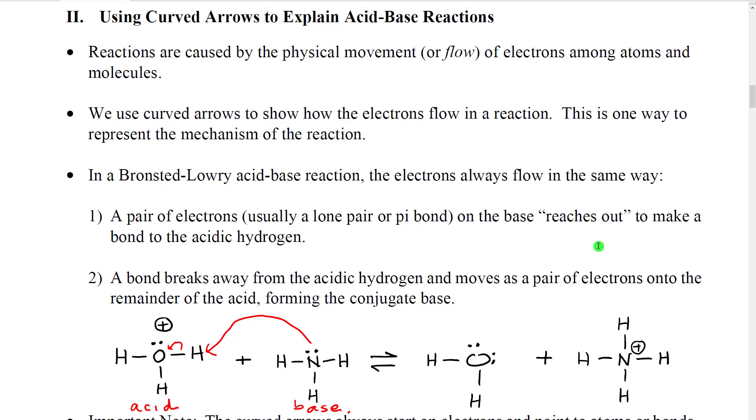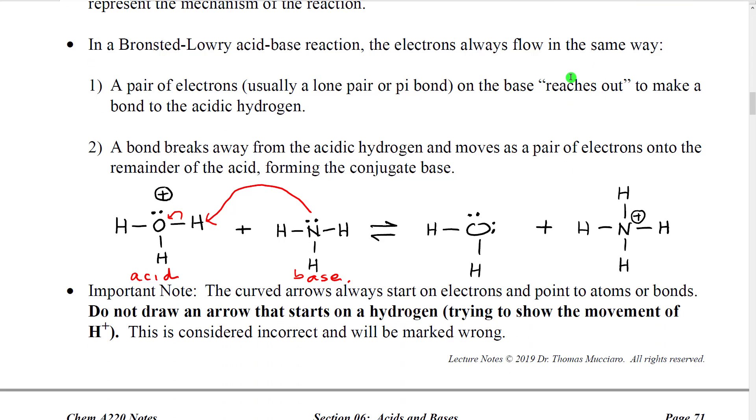So what we see in the Bronsted-Lowry acid base reaction is that electrons sort of flow between atoms and molecules. In order to show that electron flow we're going to use curved arrows very similar to the way that we use curved arrows to show how theoretically electrons might be moving among resonant structures. Now in a Bronsted-Lowry acid base reaction there is a specific pattern of electron flow that we always observe. We always see a pair of electrons which would normally be either a lone pair or a pi bond, in other words one of the multiple bonds, reaching out to make a bond to a hydrogen. The bond that the hydrogen has already will then be broken because a hydrogen is only allowed to have a maximum of one bond. It can only make a bond with two electrons.